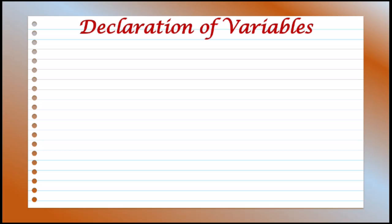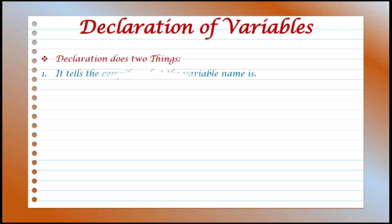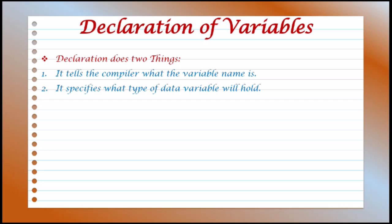When we create a suitable variable name, we must declare them to the compiler. When we declare a variable, it does two things. First, it will tell the compiler the name of the variable. And second, it also specifies what the data type of that variable is. Before using any variable in the program, first we have to declare the variable.